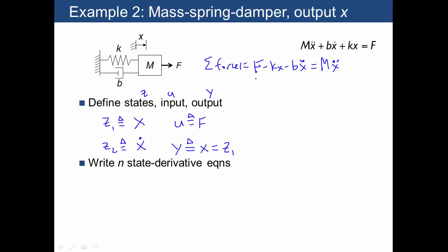We need to write a state derivative equation only in terms of our states. So let's be clear on what the correspondences are: f is the same thing as u, x is the same thing as z1, x dot is the same thing as z2.